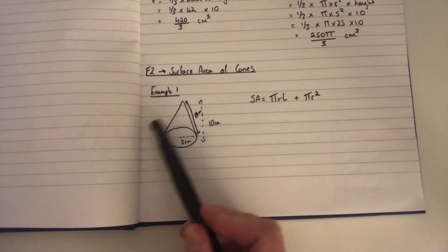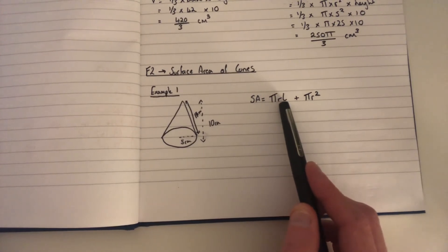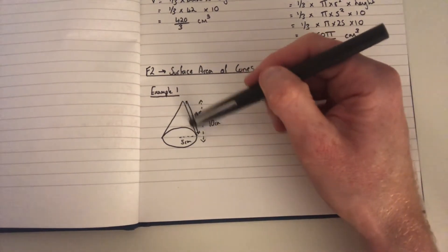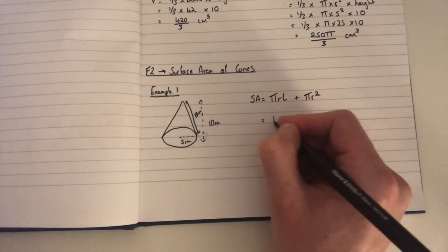and then we have this curved bit around the cone, which is given as π times the radius times l, where l is this slant height, not the vertical height. So in this case it would be π